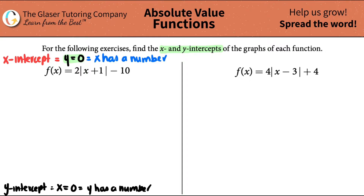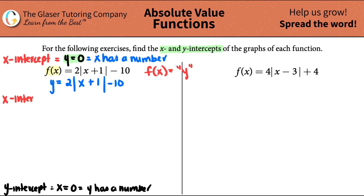Remember from previous chapters that f of x is just a fancy way of saying y. So anytime you see f of x, it's just a y value. I'm going to rewrite this as y equals 2 times the absolute value of x plus 1 minus 10. Let's do the x-intercept first. The x-intercept is when y equals 0, so I'm going to plug a 0 in for y. Now I get: 0 equals 2 times the absolute value of x plus 1 minus 10.